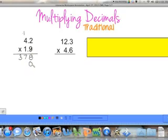Don't forget to use your 0 placeholder. 1 times 2 is 2, and 1 times 4 is 4. Go ahead and add up our totals. 8 plus 0 is 8. 7 plus 2 is 9. And 3 plus 4 is 7.